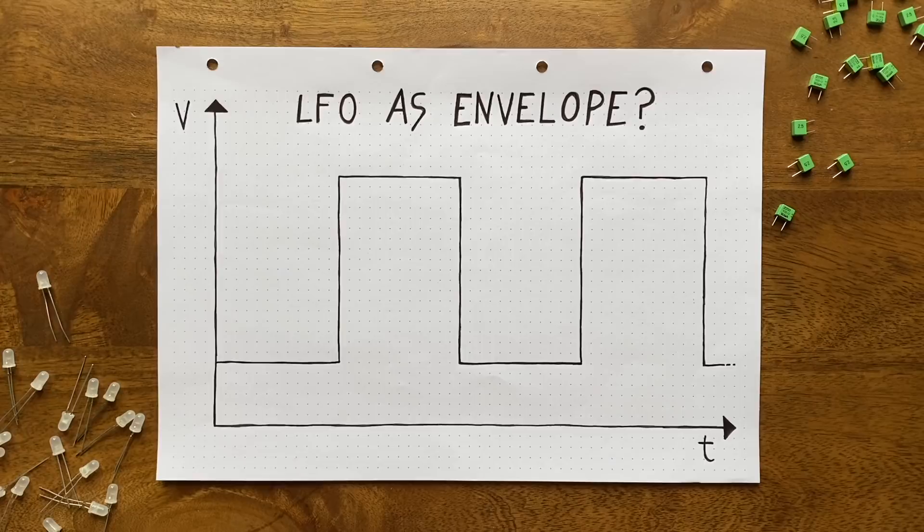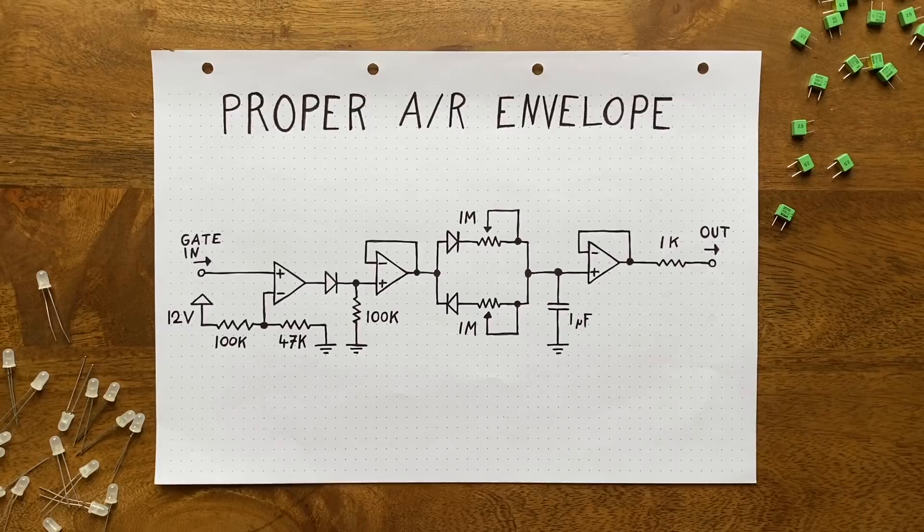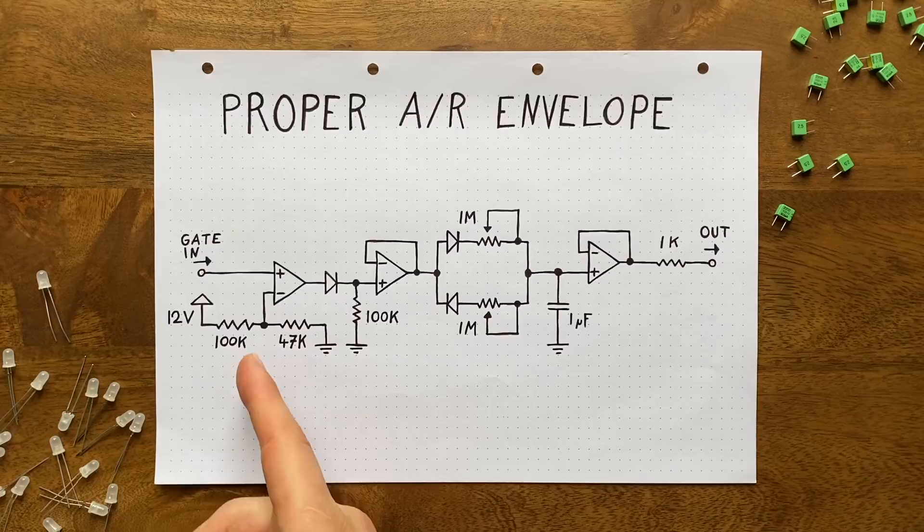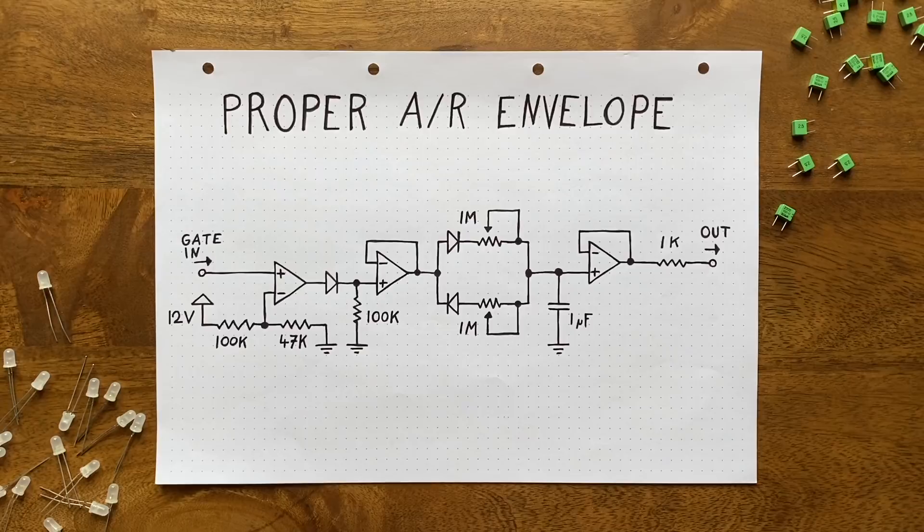To do that, we use this op-amp which I've set up in the comparator configuration. A comparator, if you don't know, basically just looks at an input voltage, compares that input voltage to a reference voltage, and then tells us which one is higher. How does it tell us? By either pushing its output voltage up to the positive or pulling it down to the negative supply rail. So in my case that would be either plus or minus 12 volts.